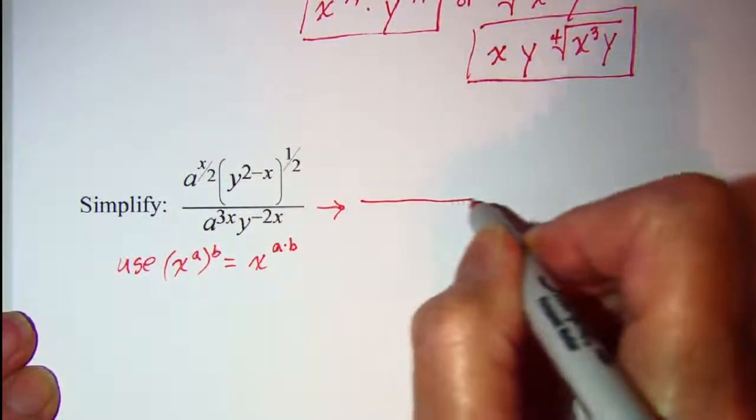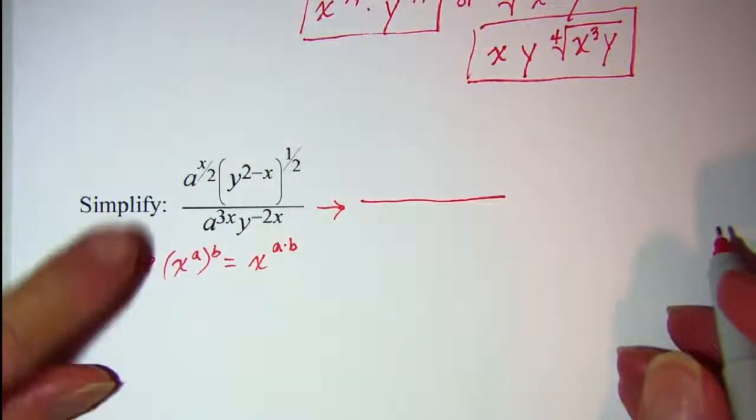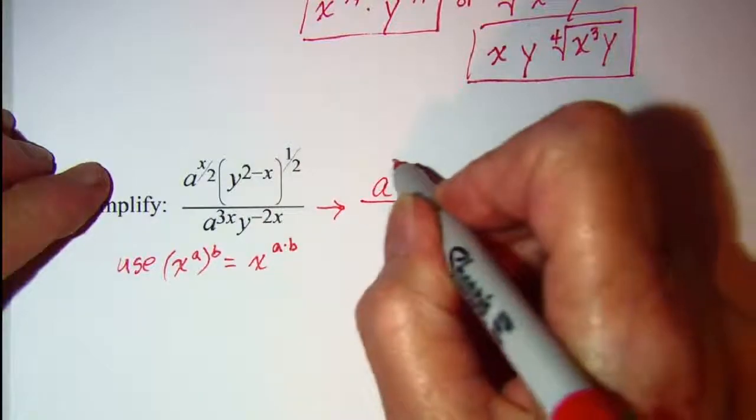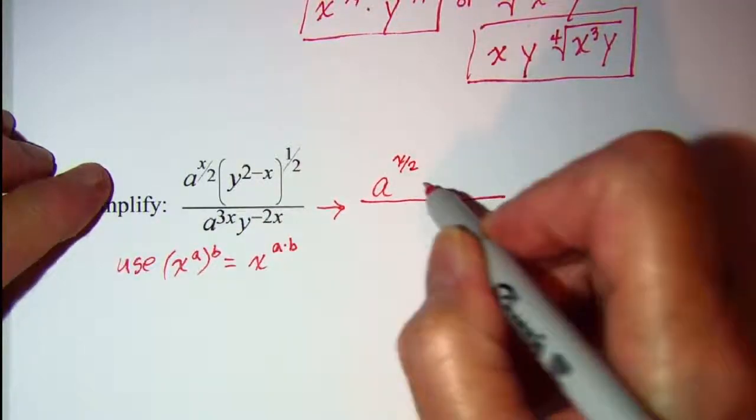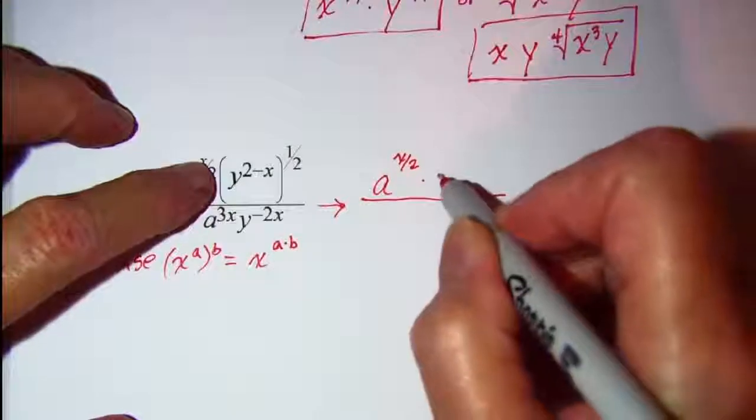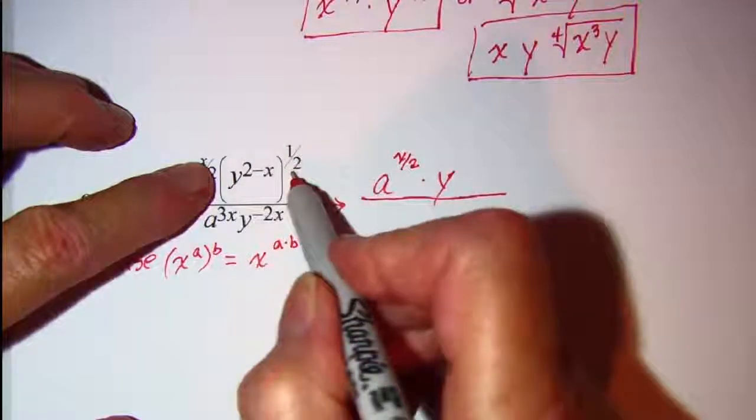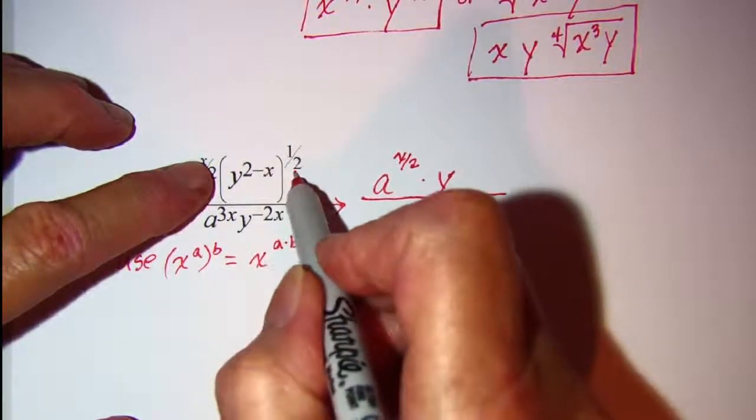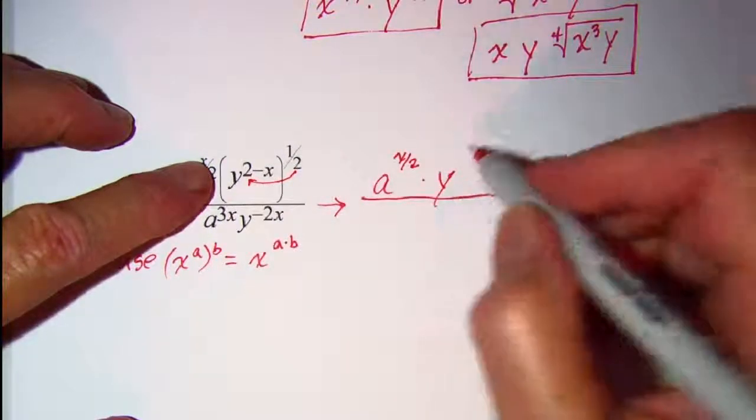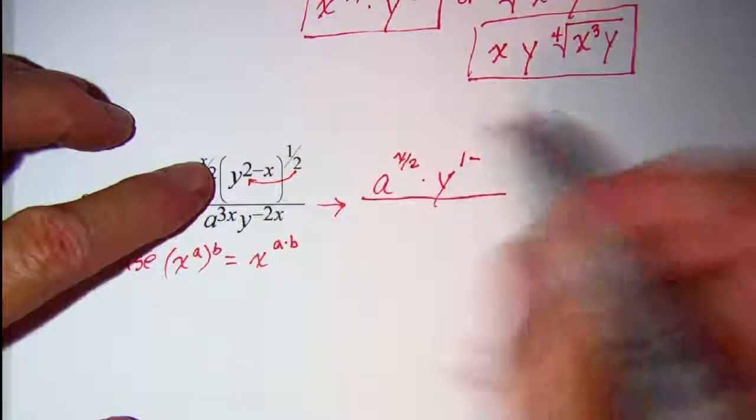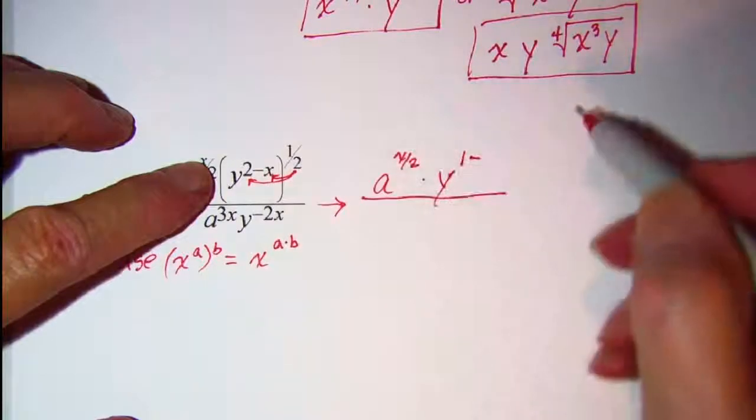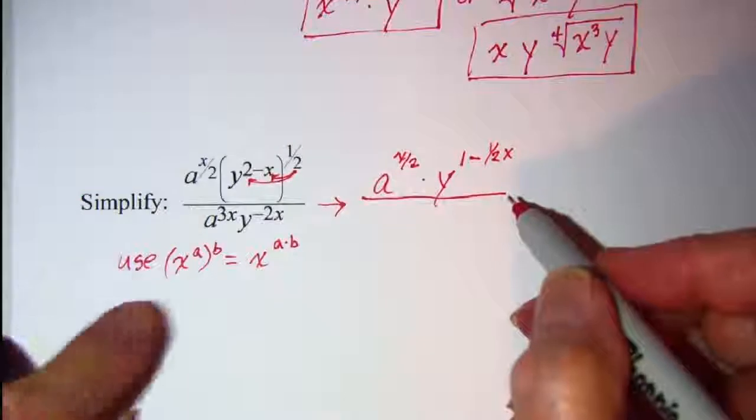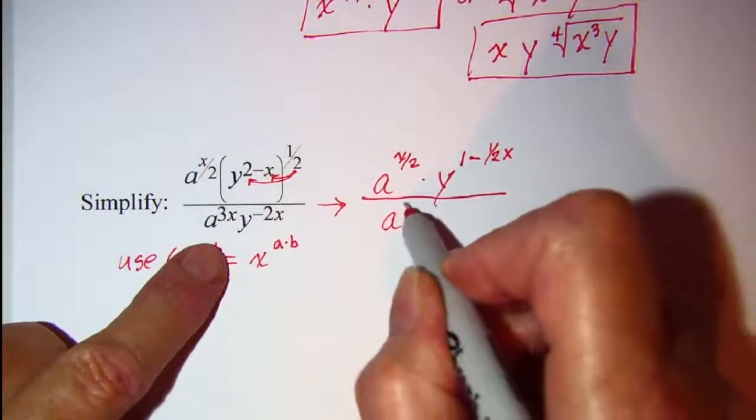So everything else I'm just going to copy. So I have a to the x over 2 and this one y to the. Now if I distribute this one half I'm using this rule. One half of 2 is 1 minus, and then one half times x is one half x. I'll just copy these factors.